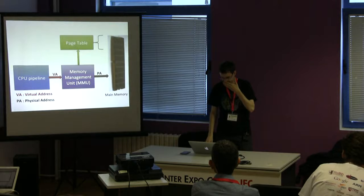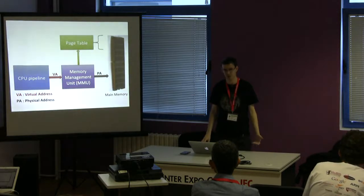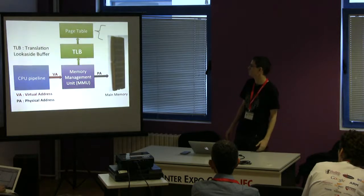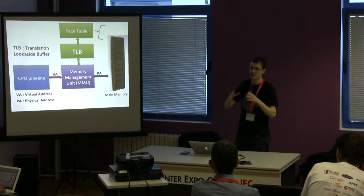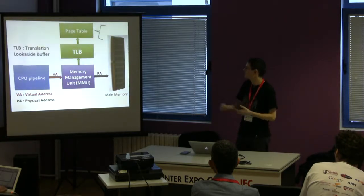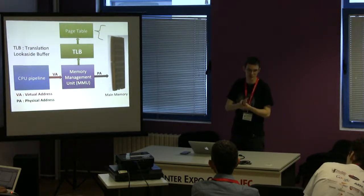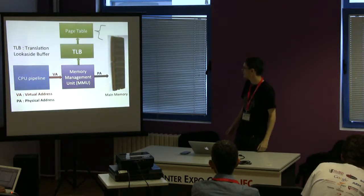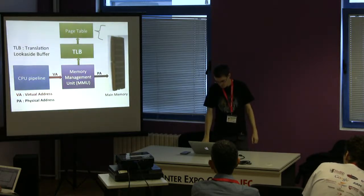We don't access the page table in RAM all the time because DRAM is really slow. Instead we use a Translation Lookaside Buffer (TLB) — it's just a cache, like the instruction and data cache, but it caches translations from virtual address to physical address. If the TLB contains the information you're looking for, in just one cycle you get your physical address translation. It's an on-chip cache so access is really fast.